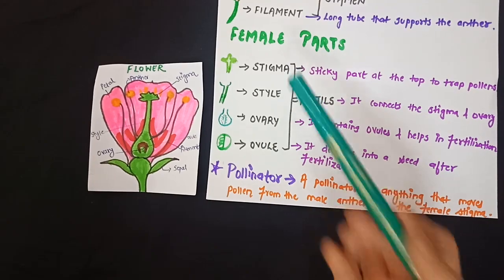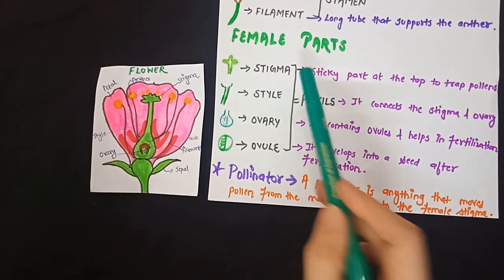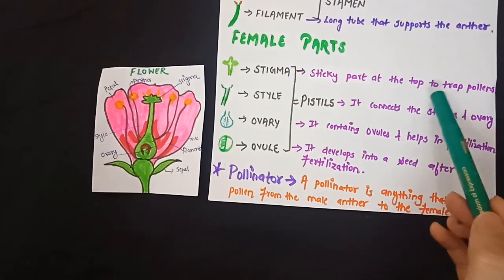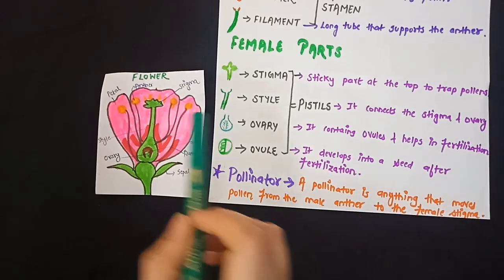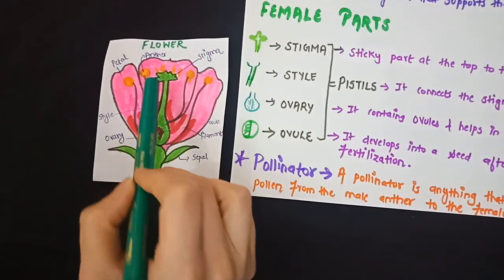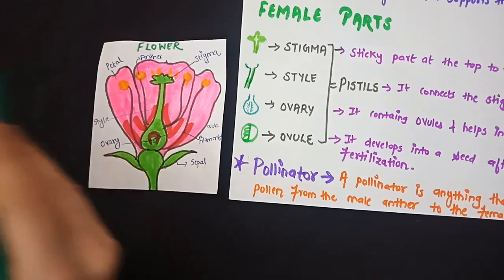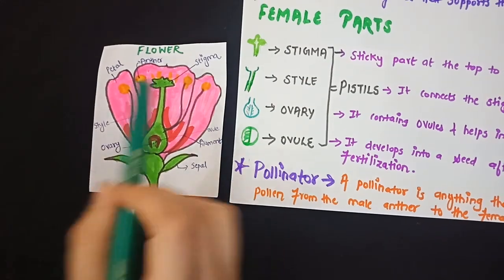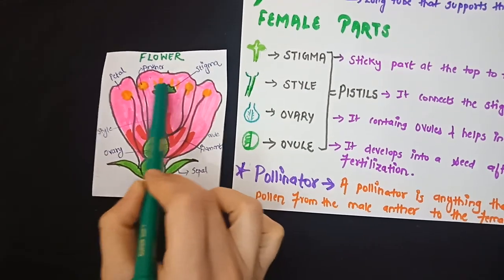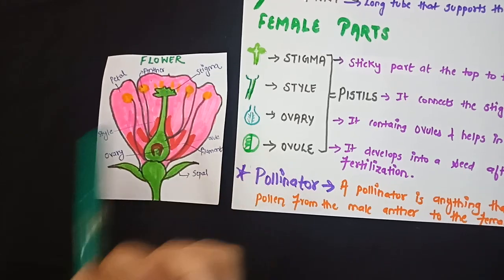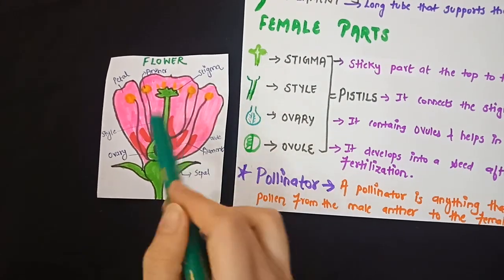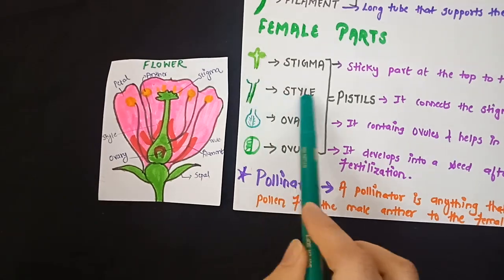The stigma is the sticky part at the top of the flower that traps pollen grains. This is your stigma — it is really very sticky. When any bee or butterfly comes and sits over the stigma, pollen grains will automatically stick to this portion, resulting in further formation.